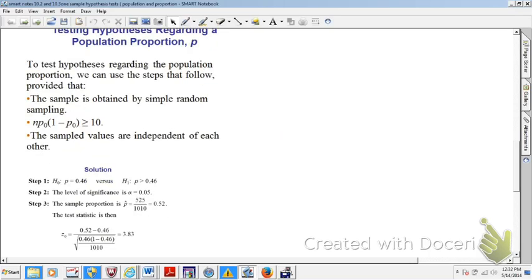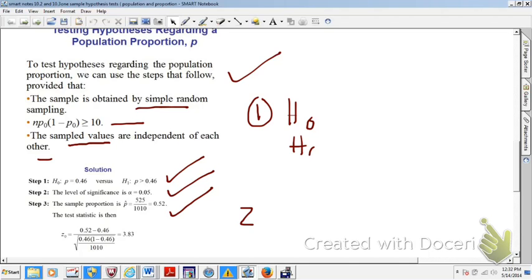To test hypotheses regarding the population proportion, we can use the steps that follow, provided that you have a simple random sample, NPQ is bigger than 10, and the sampled values are independent of one another. So here we have our null and our research hypothesis. I had set that up earlier. The level of significance is alpha 0.05. Your sample proportion is 0.52. So in your five-step procedure, step one is state the Ho and the Ha. So P is greater than 46% or P equals 46%. You could write plain old equals or less than or equal to. So either of those would suffice.